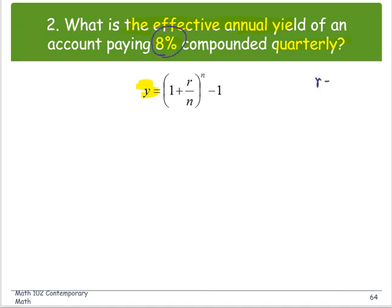paying 8%, the r is 8%, which is 0.08, compounded quarterly, that means 4 times in a year, or n equals 4.